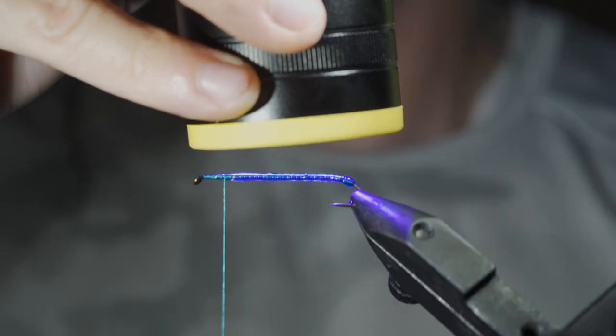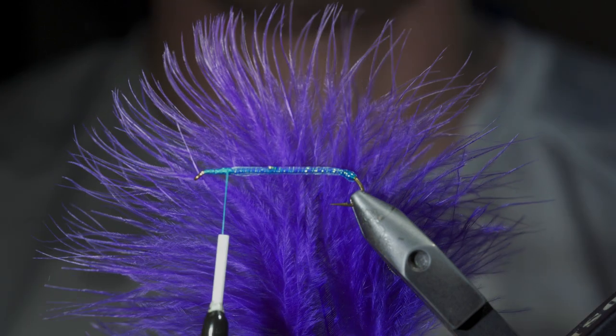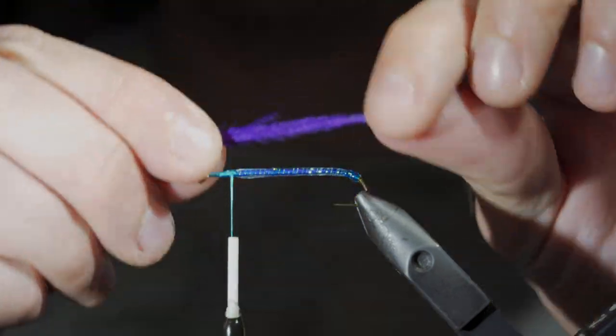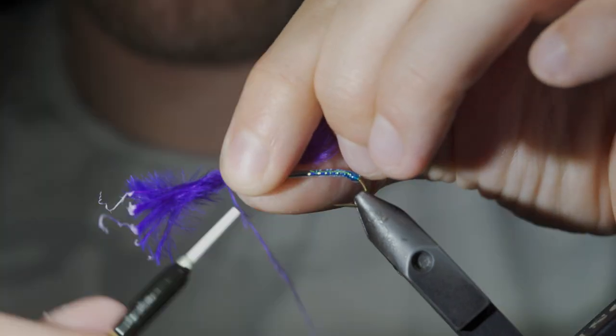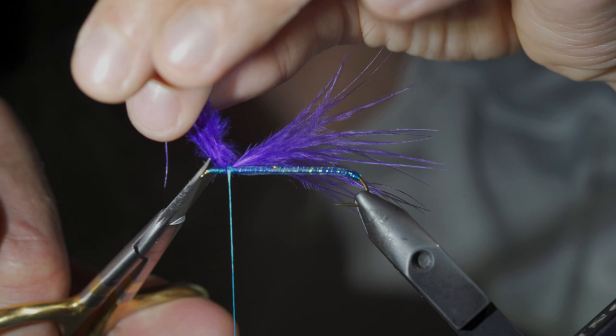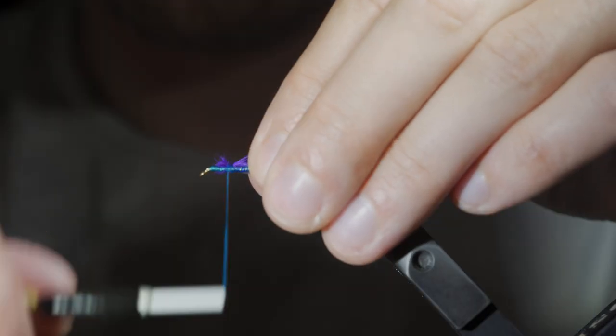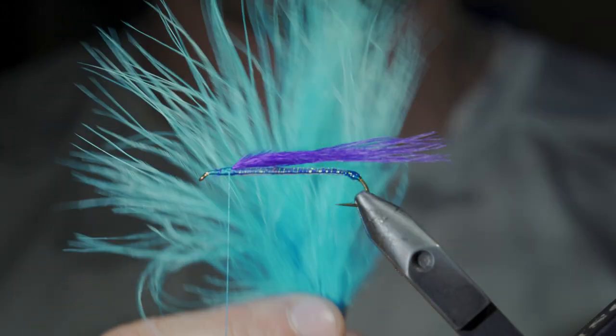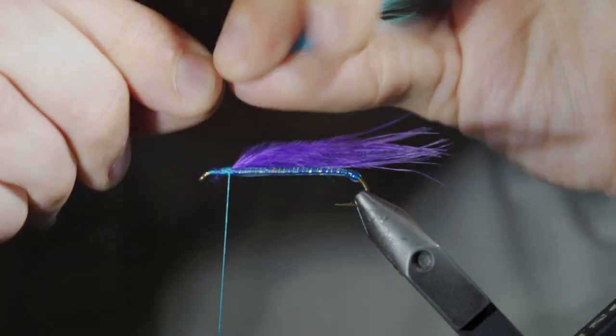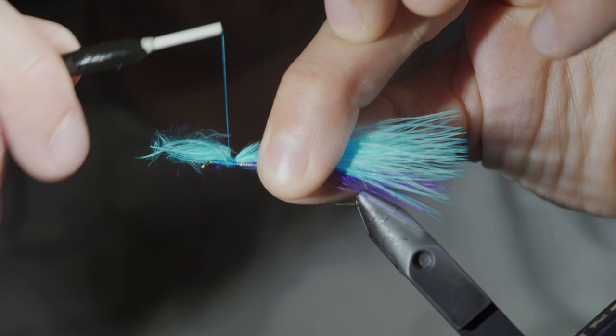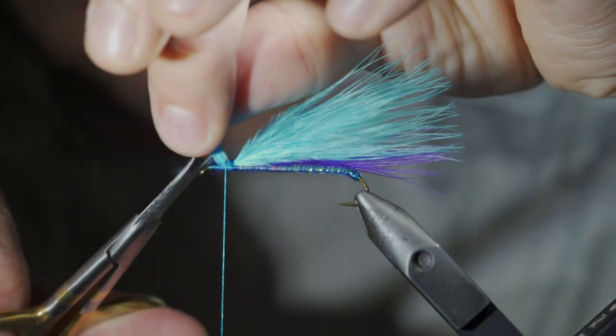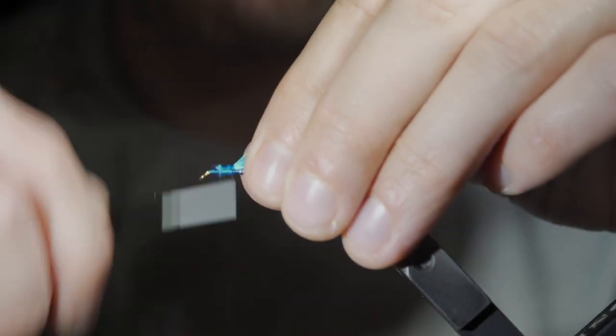Fix in place with a UV light and grab some marabou. Here I'm using purple. Measure the marabou to be a bit longer than our hook shank and secure it to the top side of our fly. Snip the excess free and cover up your tag ends. We'll then grab some blue marabou, select a small clump, once again securing it to the top side of our fly. Secure tightly. Snip the excess free and cover up your tag ends slightly.